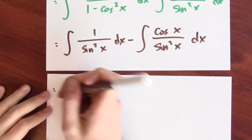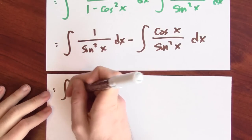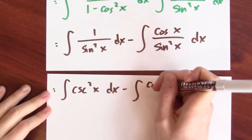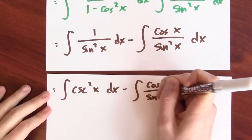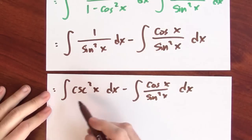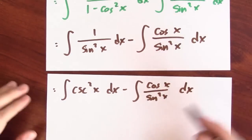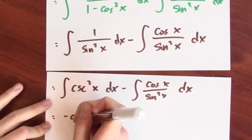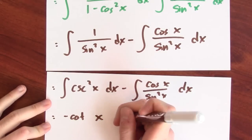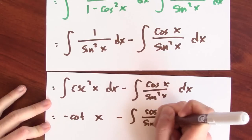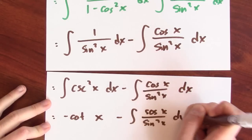That first integral is one I can do. Rewrite it as the anti-derivative of cosecant squared x. I just have to think: do I know any function whose derivative is cosecant squared? Yes — negative cotangent is an anti-derivative of cosecant squared of x.